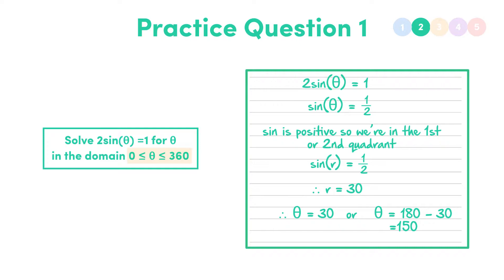Remember what I was saying about the domain before. If our domain was for values of theta between 0 and 90, we would only give the answer theta equals 30, because 150 lies outside of this range.